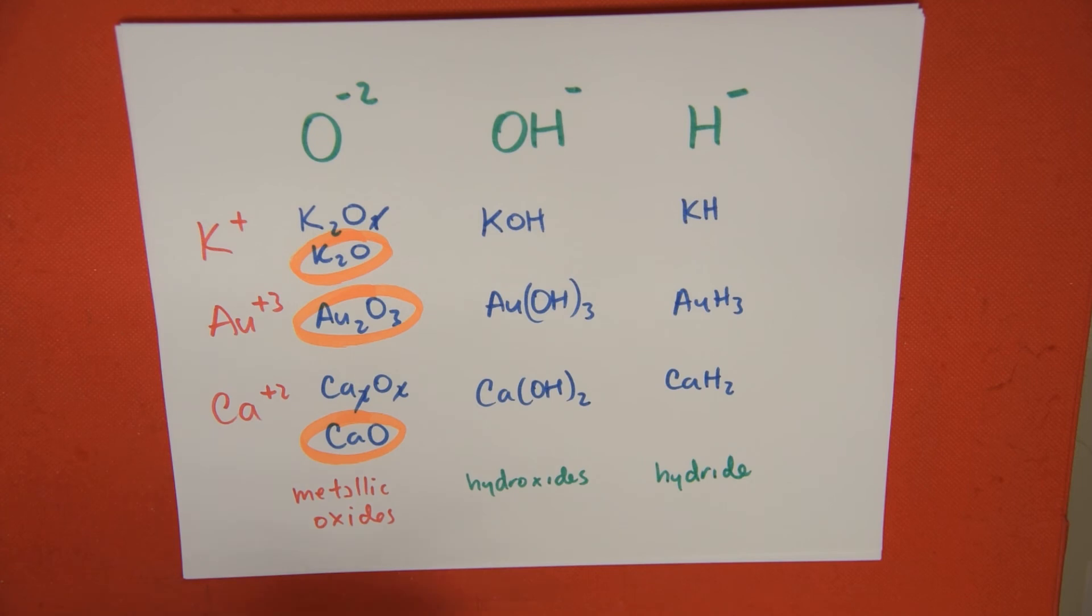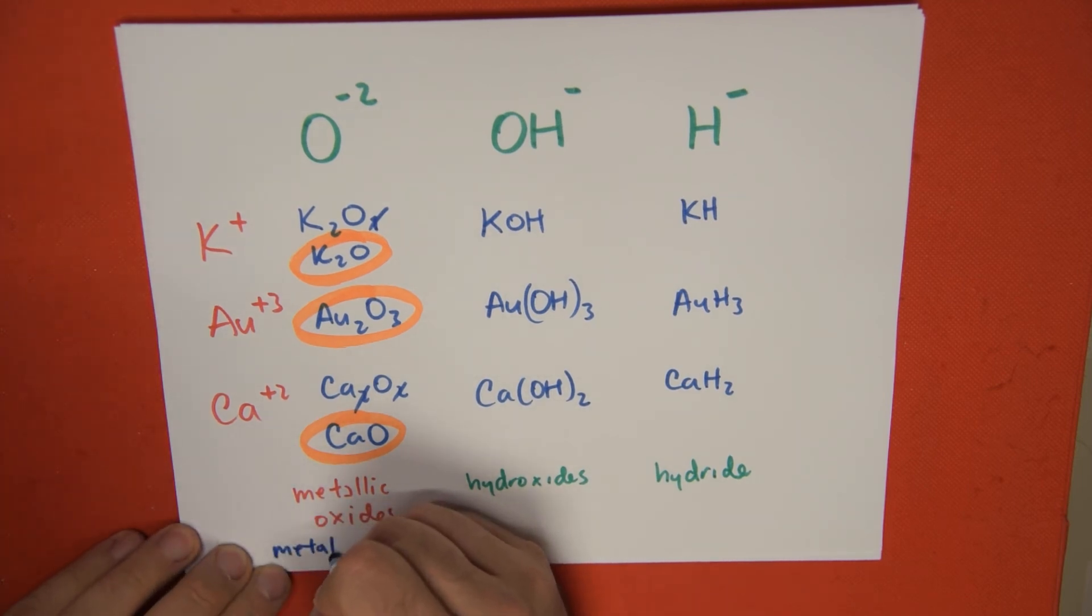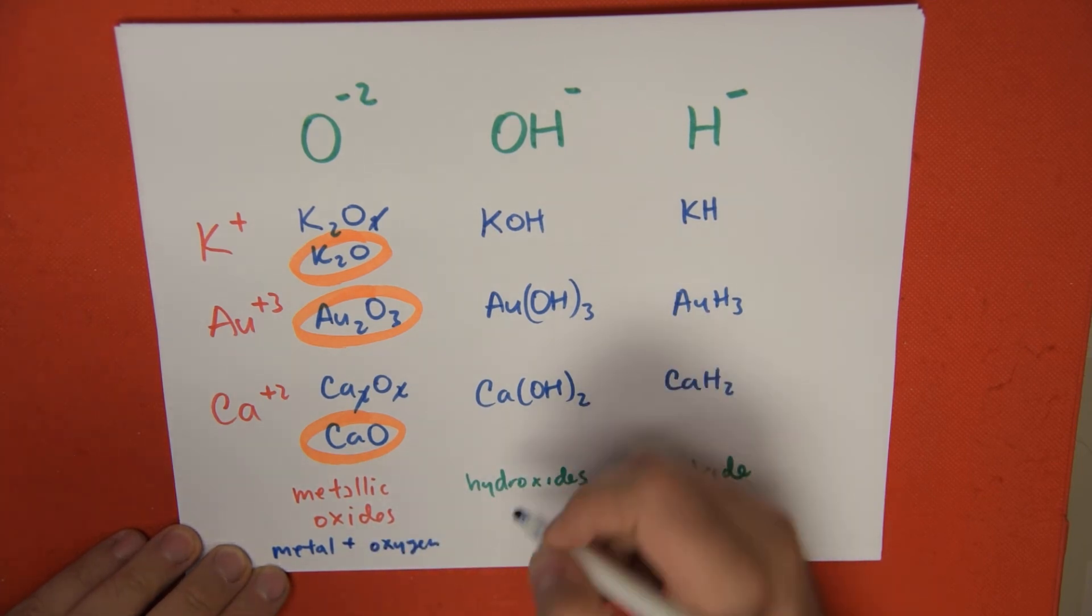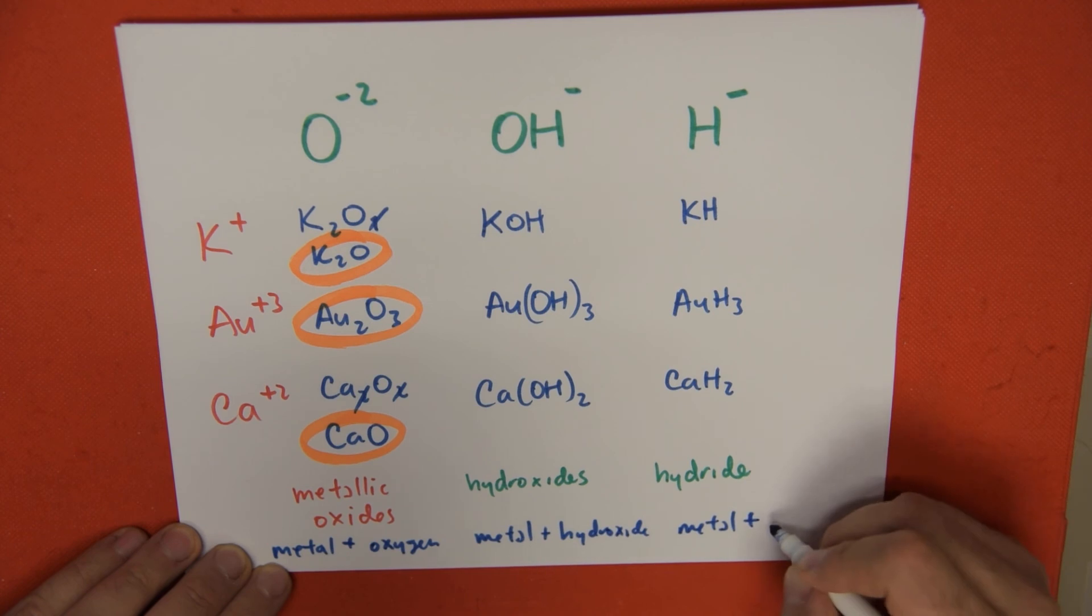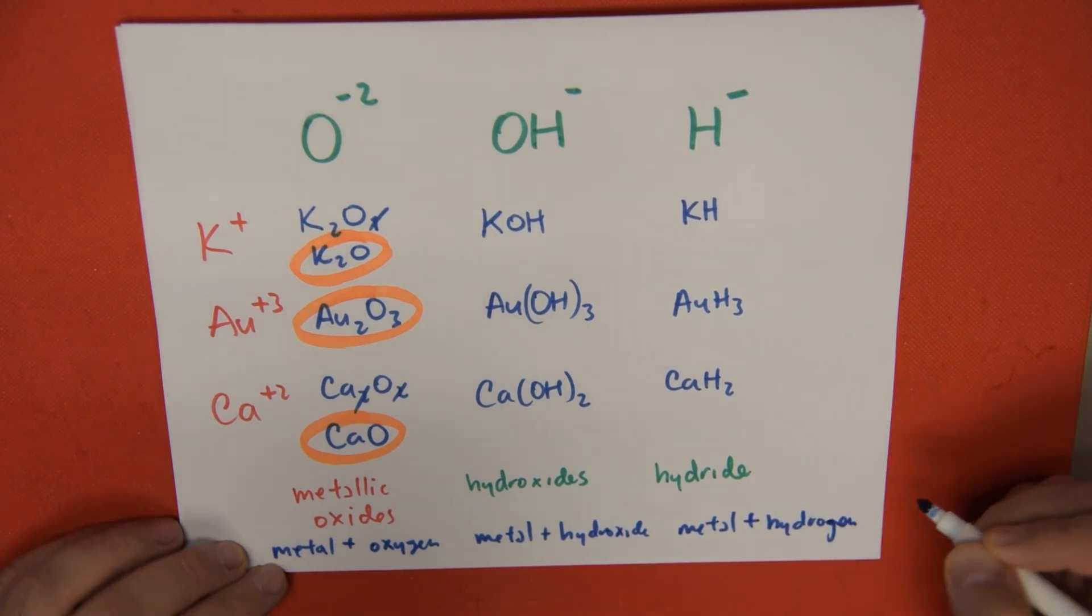So remember, metallic oxides is metal plus oxygen. Hydroxides are metal plus hydroxide anion. And last but not least, hydrides are metal plus hydrogen anion.